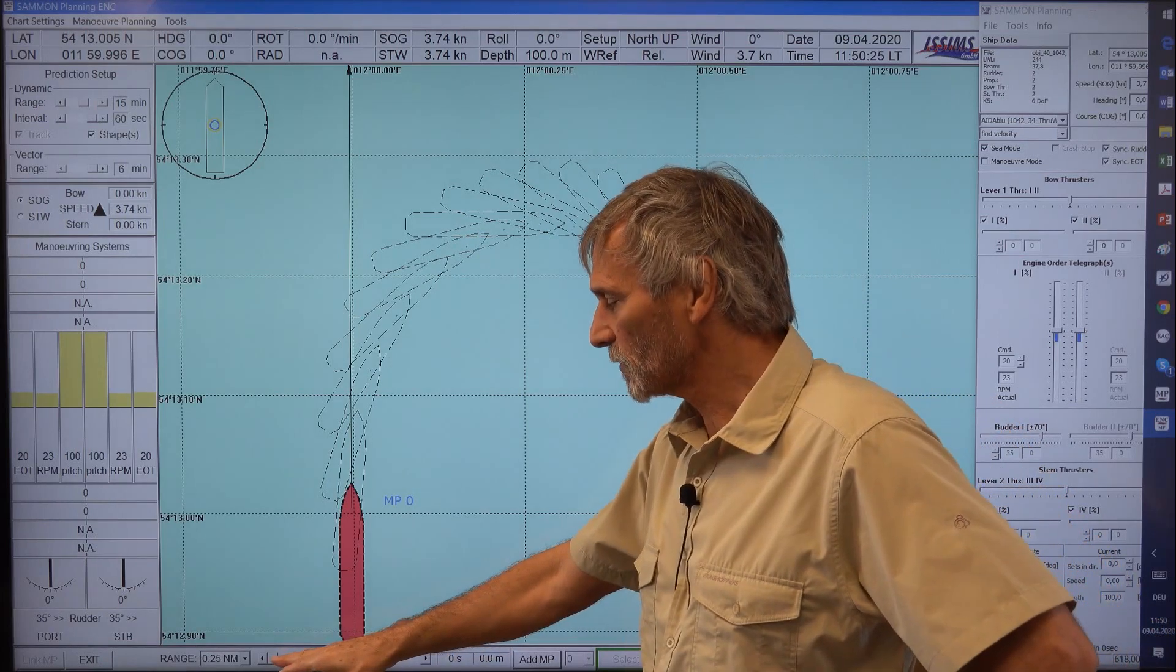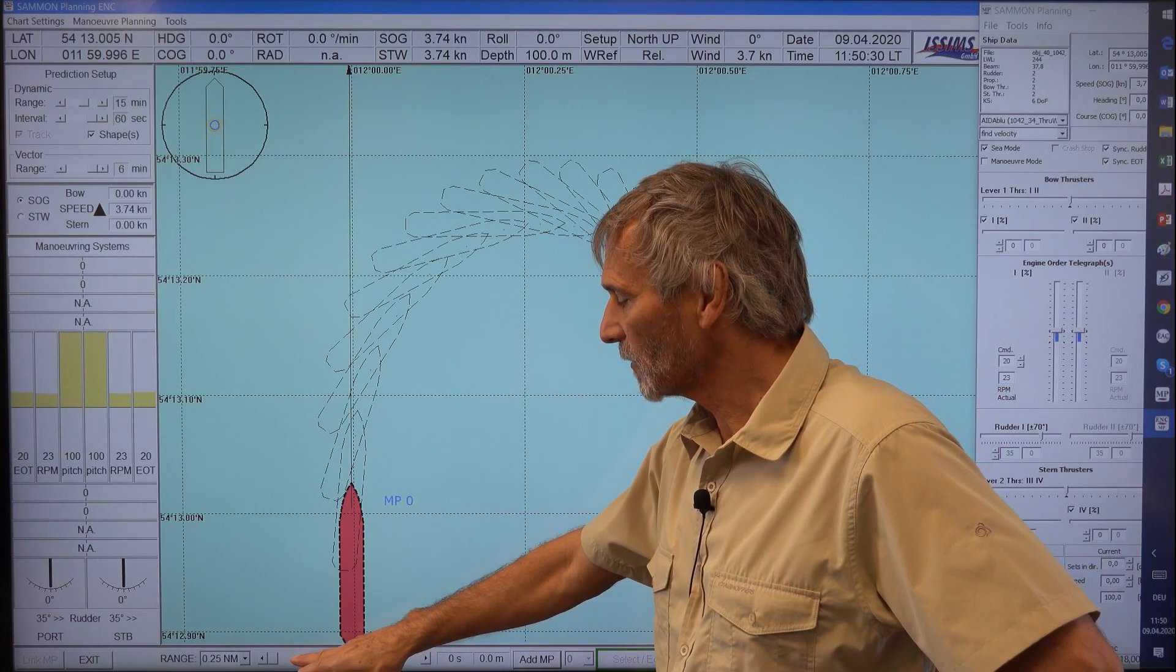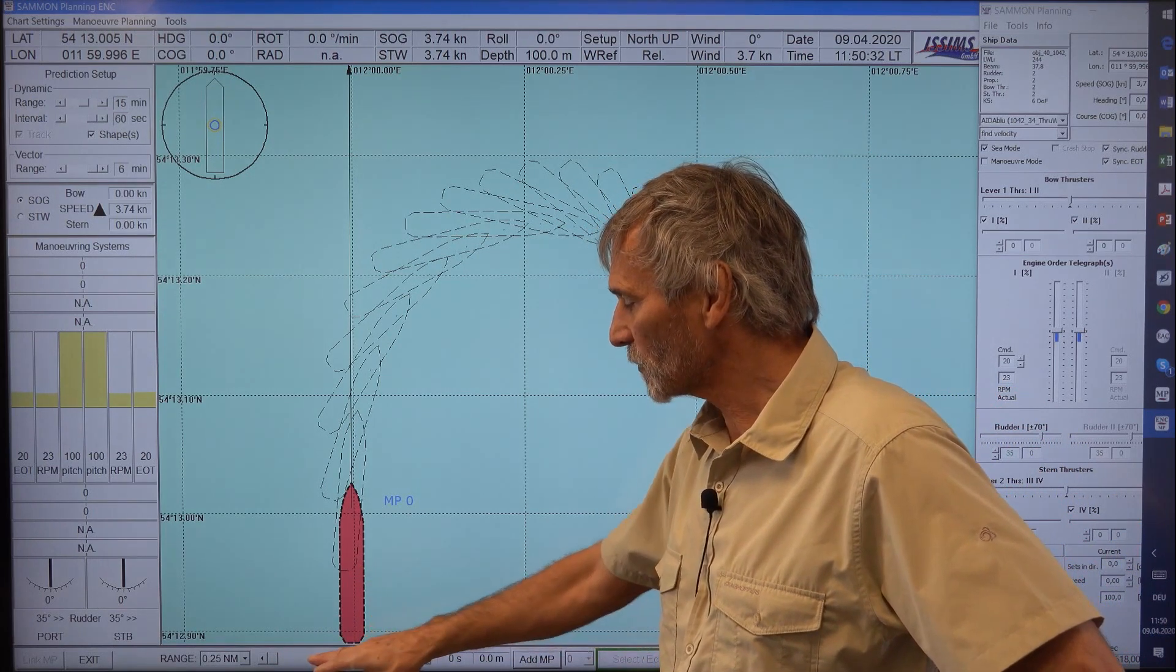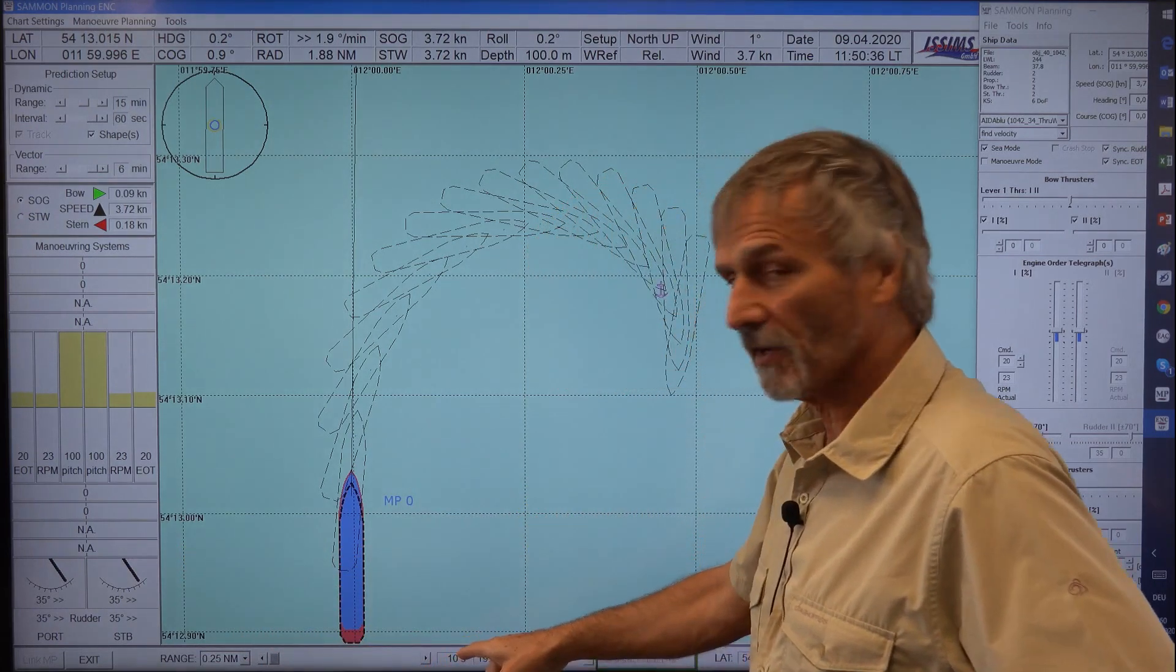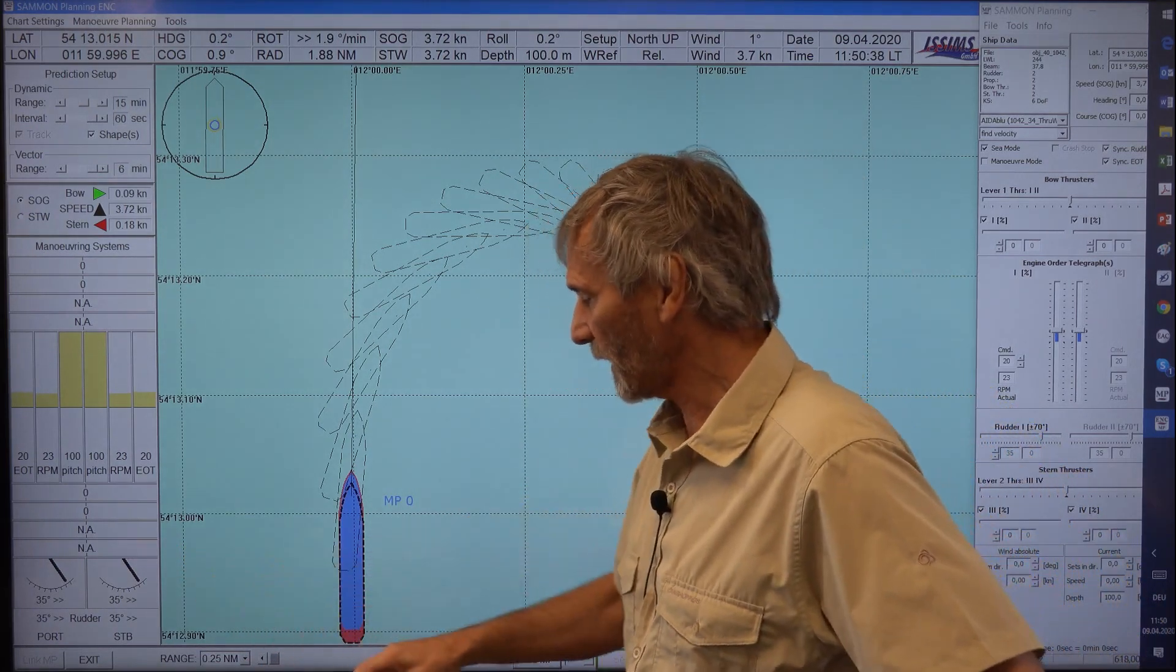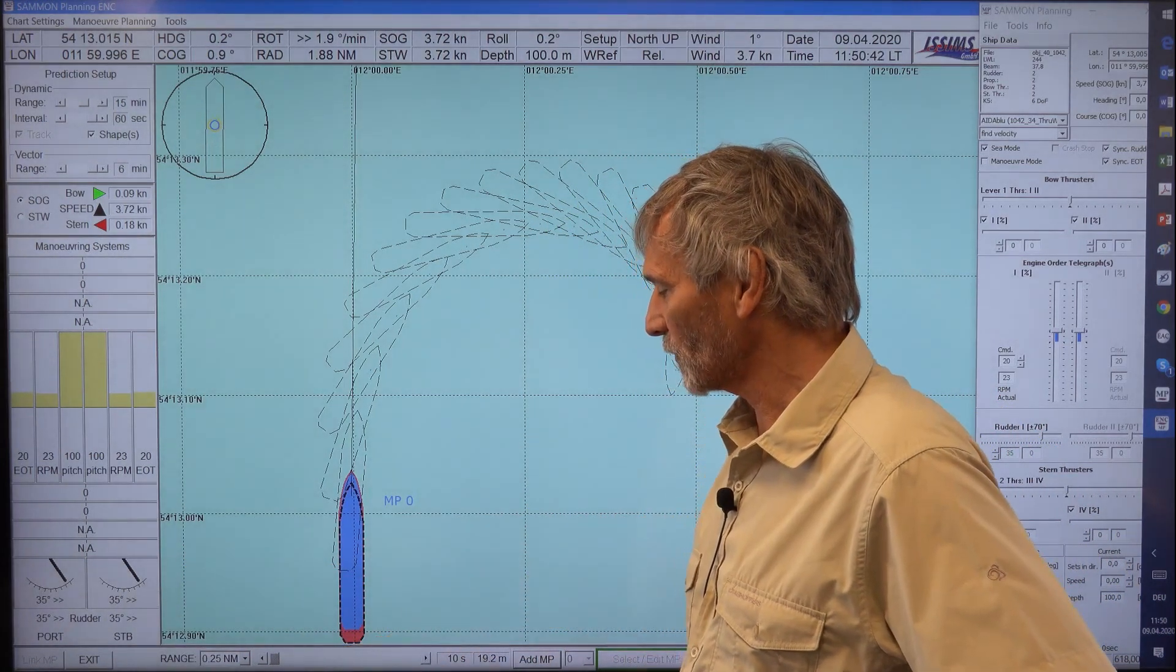So now it's 6 minutes. And when we want to see in detail what happens along this track, then we move this magic time slider here. And then the ship is going out of the reference position. You see here, then now after 10 seconds the rudder is already full deflected. And then you see that the ship is moving out of this one.